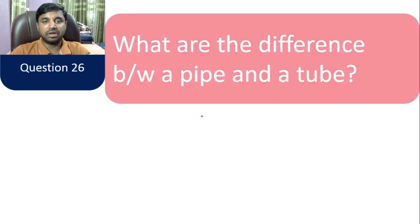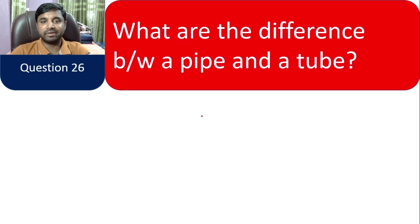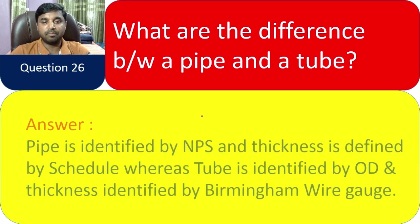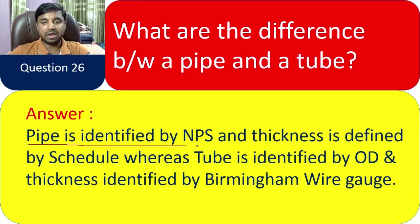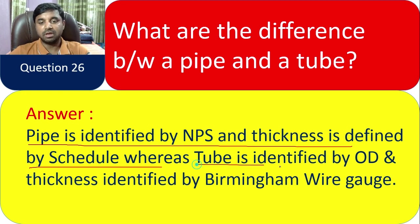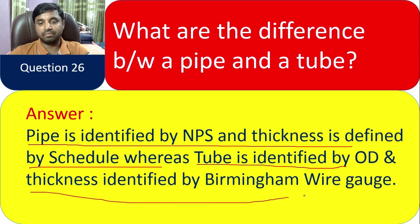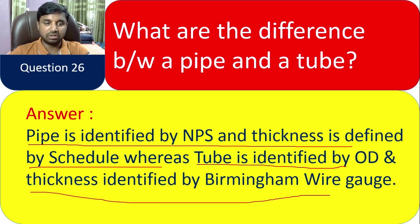Question 26: What is the difference between a pipe and a tube? Pipe is identified by NPS (Nominal Pipe Size) and thickness is defined by schedule, whereas tube is identified by OD (outside diameter) and thickness is identified by BWG (Birmingham Wire Gauge).